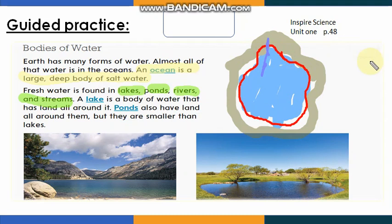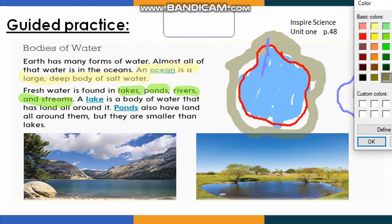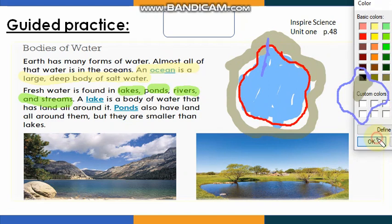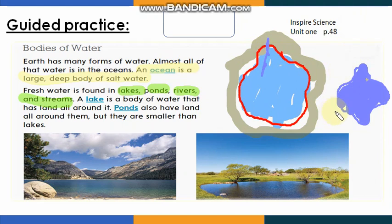The pond is the same as the lake but smaller. Let's draw a pond — it's smaller than the lake. I'll color it blue as well. It also has fresh water. As you can see, the pond is the same as the lake but smaller and also has land all around it.